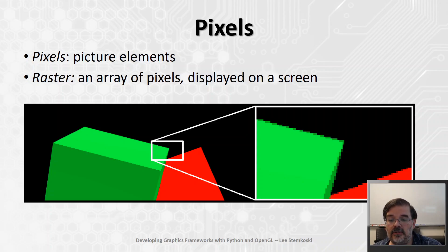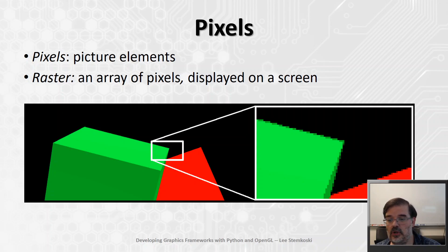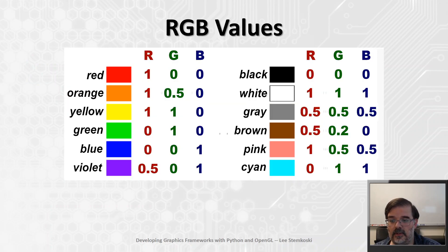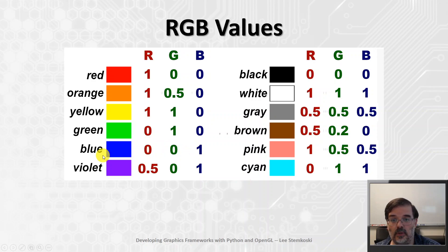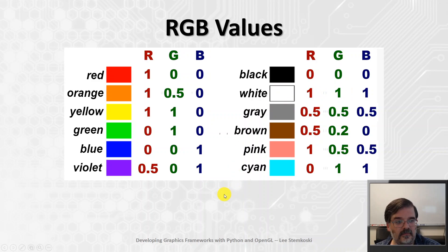On modern computer systems, pixels specify colors using triples of floating point numbers between 0 and 1 to represent the amount of red, green, and blue light present in a color. A value of 0 represents no amount of that color, while a value of 1 represents that color at full intensity. These three colors are used because photoreceptors in the human eye respond to those particular colors. The triple (1,0,0) represents red, (0,1,0) represents green, and (0,0,1) represents blue. If all components are 0, no light is emitted, resulting in black, while if each value is 1, white light is the result. In this chart, you can see a number of different colors and their corresponding RGB values.